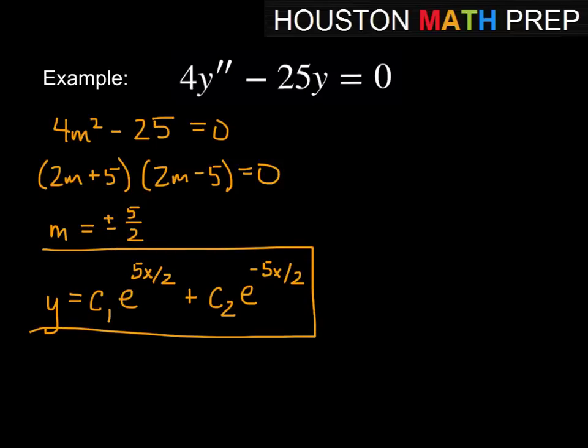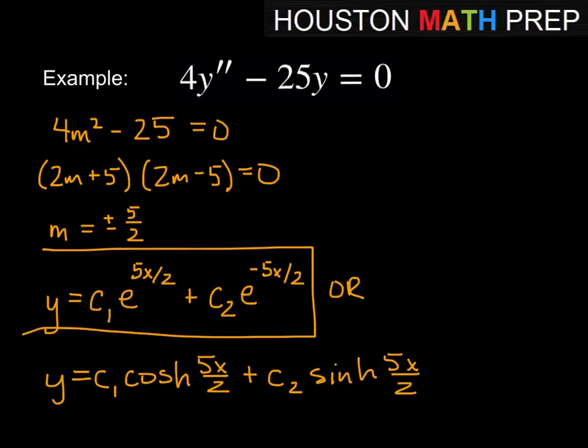And we could certainly leave it that way, and a lot of people will want it in that form. Or we can change to the hyperbolic notation y = c₁cosh(5x/2) + c₂sinh(5x/2). So either of those would be equivalent. Okay, this should give you a very good start, I think, on when we have distinct real roots when we're working with the auxiliary equation for second order.